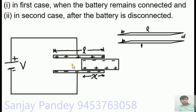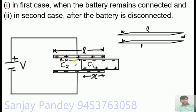We will find the force on the dielectric slab under two conditions: first when the battery remains connected, and second when the battery is disconnected. Let L be the length and B be the width of the capacitor. At any instant, let X be the portion of the dielectric slab inside the capacitor, with capacitance C1, and the remaining part has capacitance C2. The whole system can be considered as a parallel combination of C1 and C2.